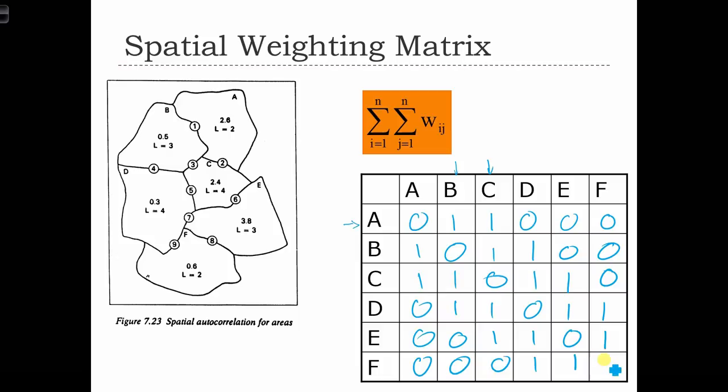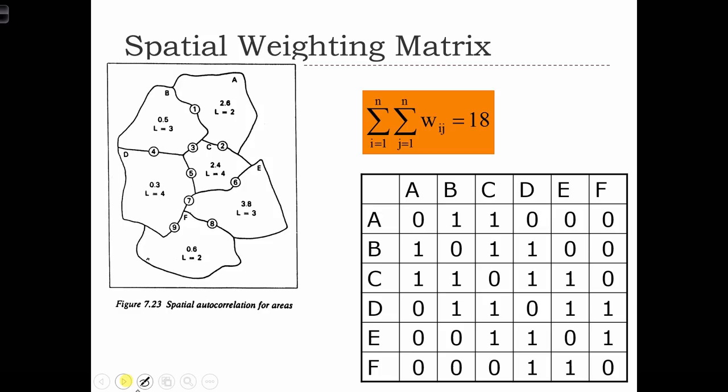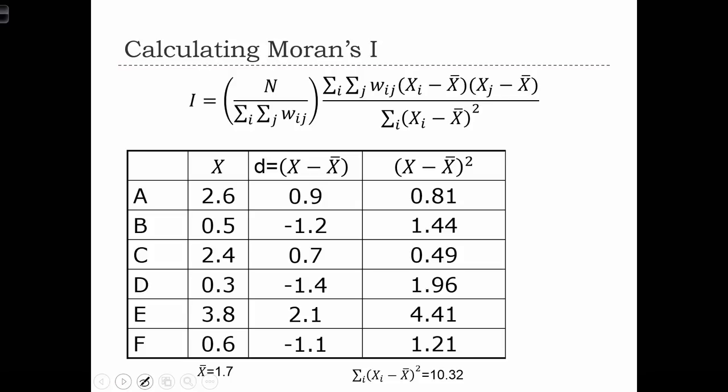So now we have our weight matrix. And in the formula for Moran's I, we have to know the sum over all i's and all j's of W_ij. In other words, we have to add up all the values in this matrix. And when we do that, we see that the sum of all of these ones is equal to 18. So that sum of sum of W appears over here in the denominator of this first fraction.